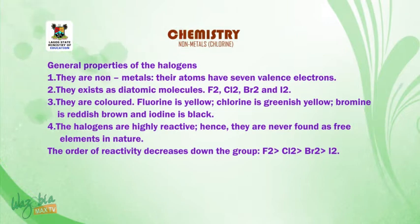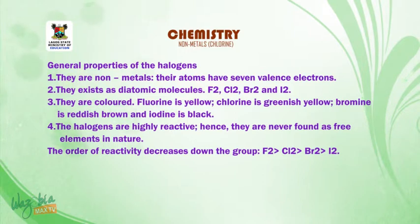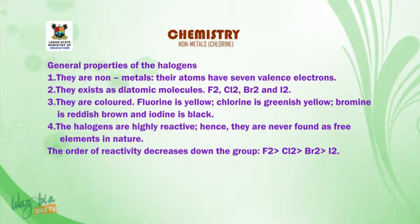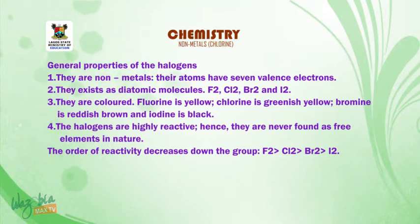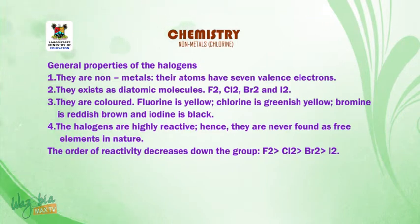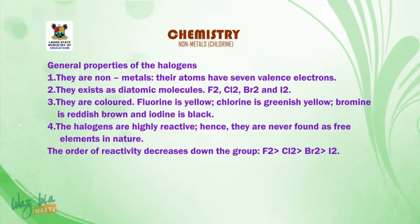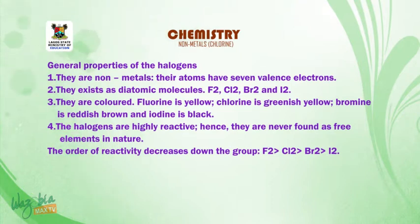General properties of the halogens. Number 1: they are non-metals; their atoms have 7 valence electrons. Number 2: they exist as diatomic molecules — F2, Cl2, Br2 and I2. Number 3: they are colored — fluorine is yellow, chlorine is greenish-yellow, bromine is reddish-brown, and iodine is black. Number 4: the halogens are highly reactive and they are never found as free elements in nature. The order of reactivity decreases down the group.